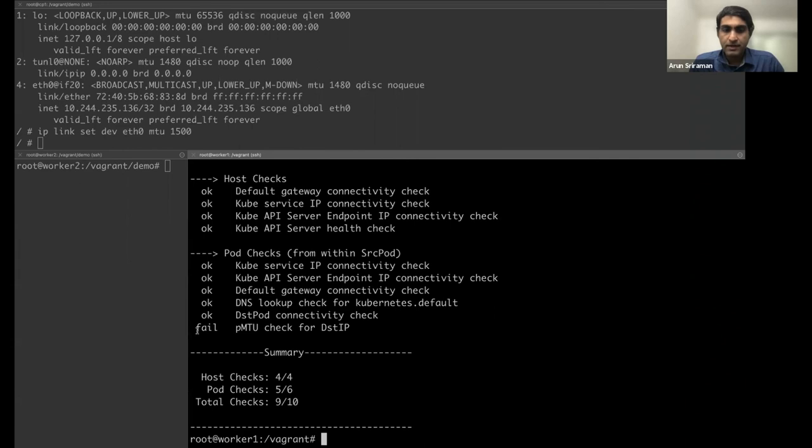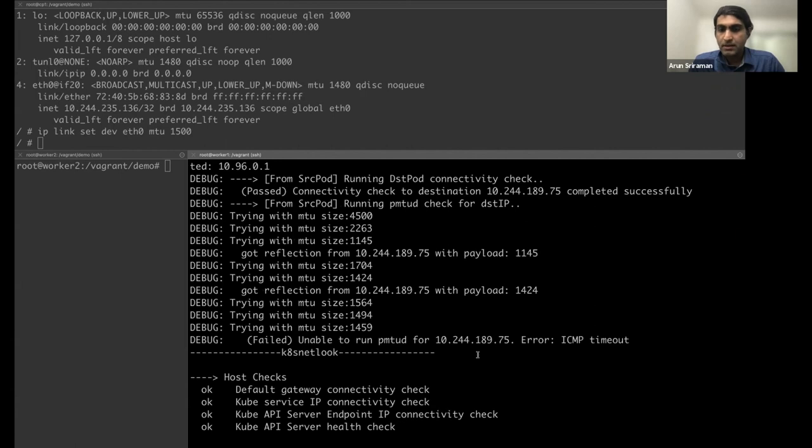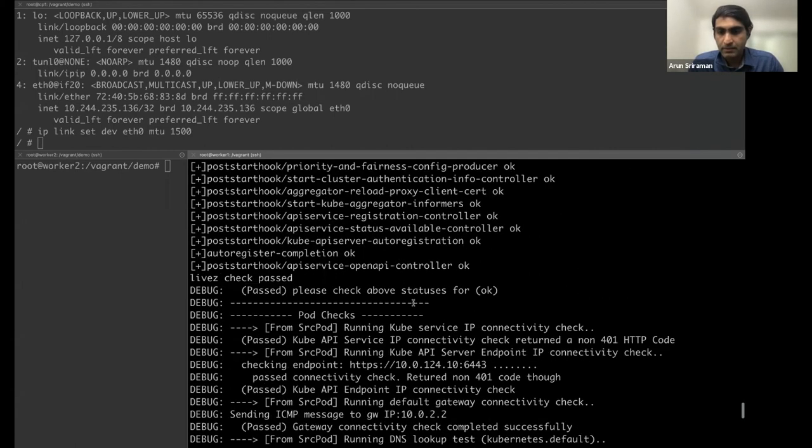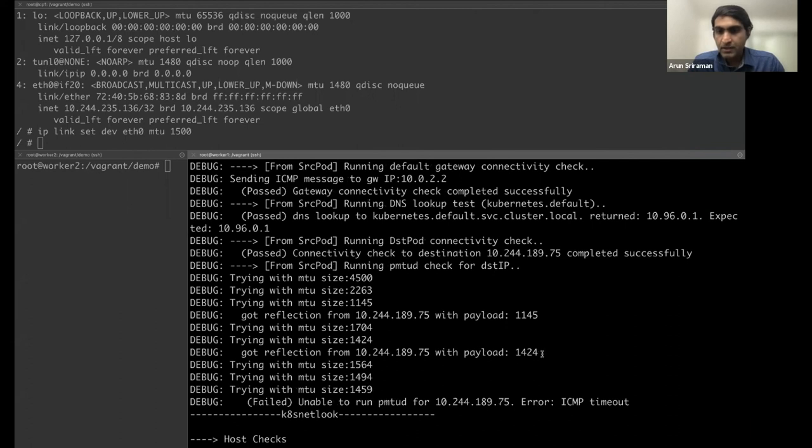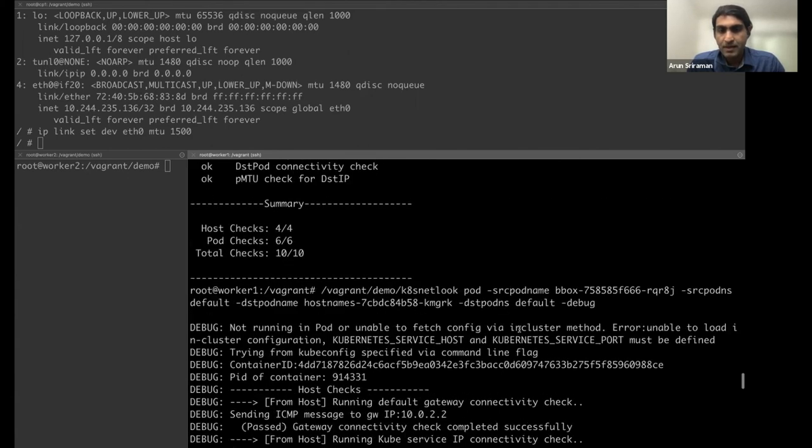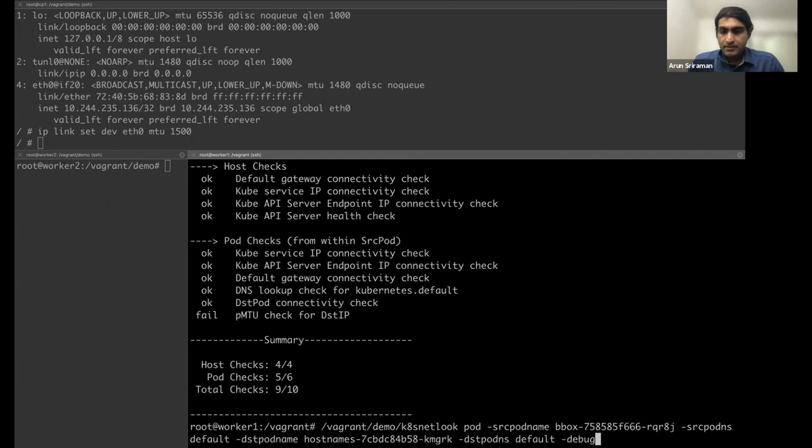PMTU check for destination IP actually failed because it's not able to get things from there. And if you look at the PMTU discovery, it got a reflection for 1424 bytes, but it didn't get something for 1500. So there you go.